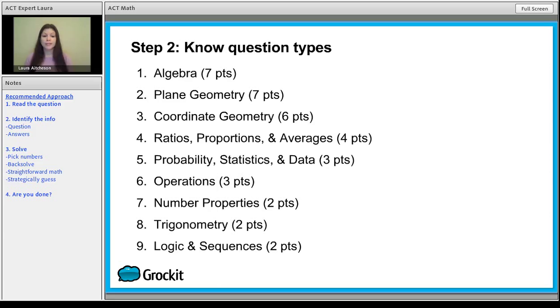So for this week, we're actually going to be doing algebra, ratios, proportions, and averages, and number properties. So that's three categories out of nine. And you're actually going to be working on 13 points out of 36. So after this week, you'll be more than a third of the way done with math.